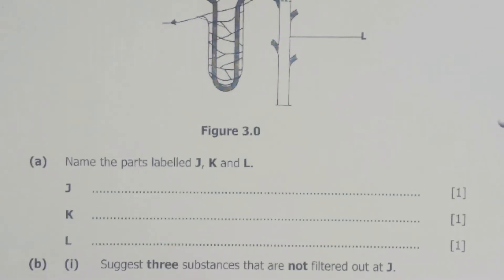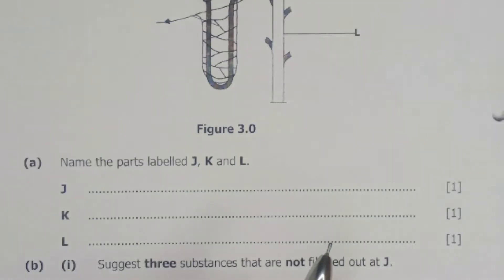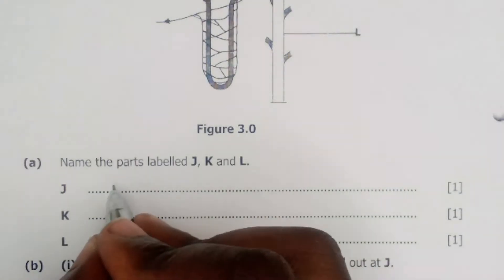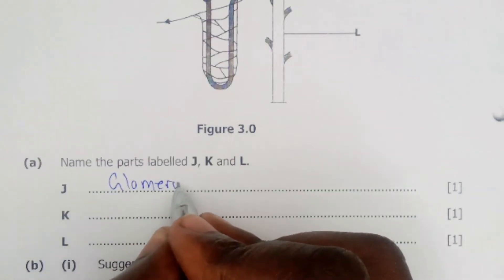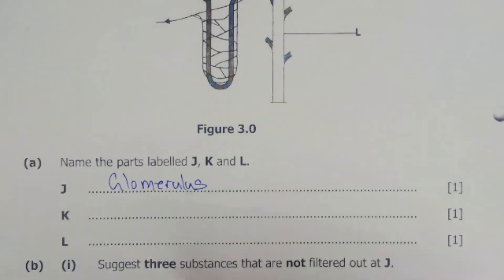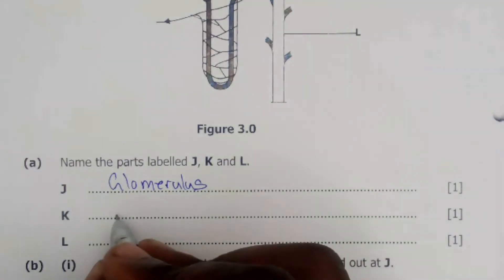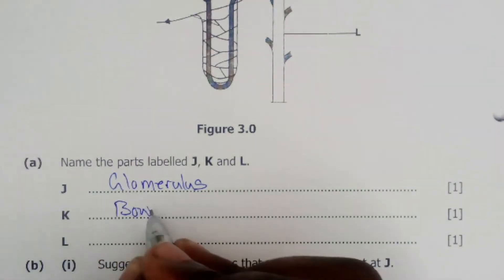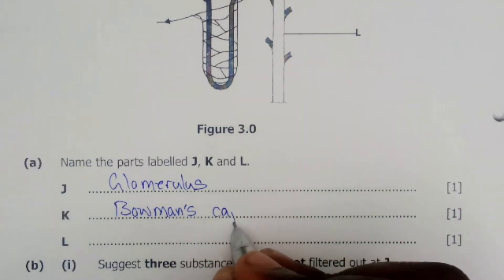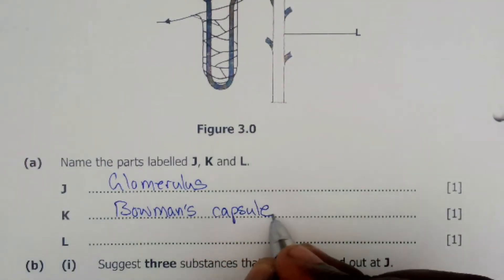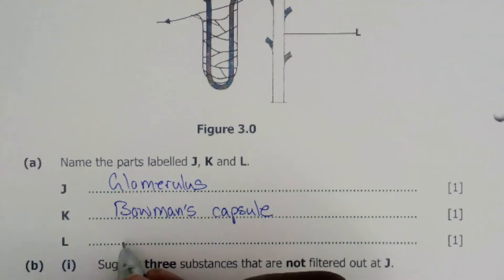So we said that for part J, this is the glomerulus. Then for K we have the Bowman's capsule, and for L it's the collecting duct.